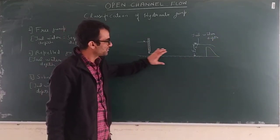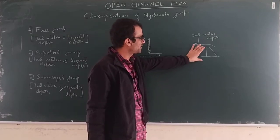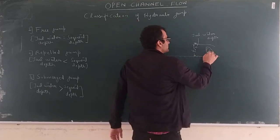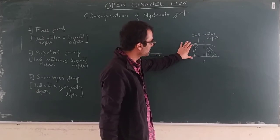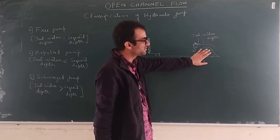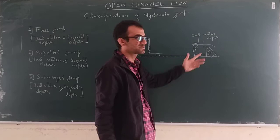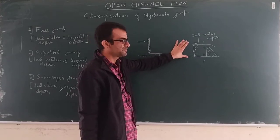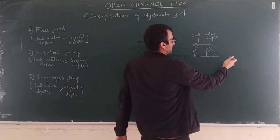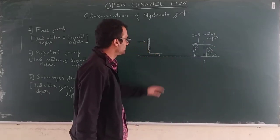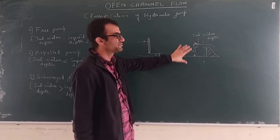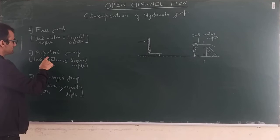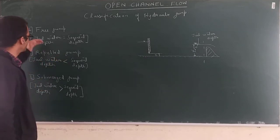Tail water depth depends upon the physical conditions of the channel. For example, an overflow structure downstream acts as a control section governing the tail water depth. Alternatively, there may be no obstruction — just a mild slope such that the normal depth gives some tail water depth. A stilling basin can also give tail water depth. Based on the tail water depth, three types of jumps are possible: first is the free jump, second is the repelled jump, and third is the submerged jump.